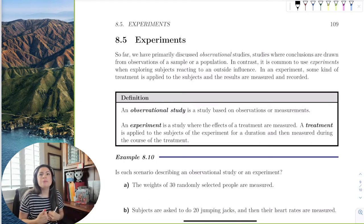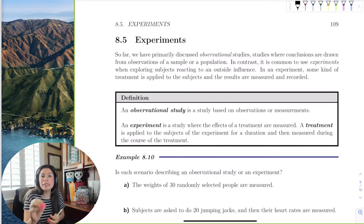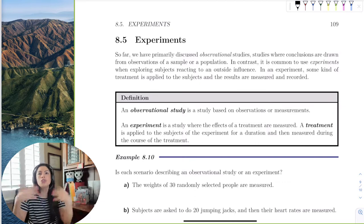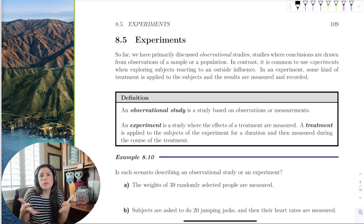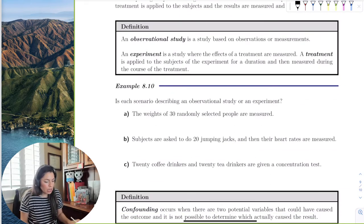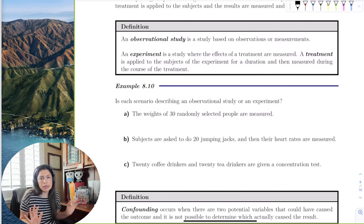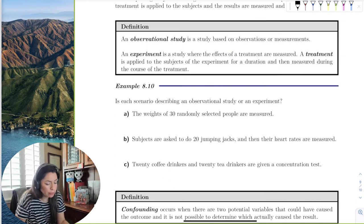An experiment says, here, let me give you some medicine or let me give you some diet food and then come back every two weeks and tell me how you're doing. Now you're doing something to your subject. You're not observing. You're now doing a treatment and then you're recording some results. Okay, so let's go ahead and see the difference. The weight of 30 randomly selected people are measured. So you're not doing anything to the subject. You're just asking whatever exists, their weight, and then a response back. So that would be observational.